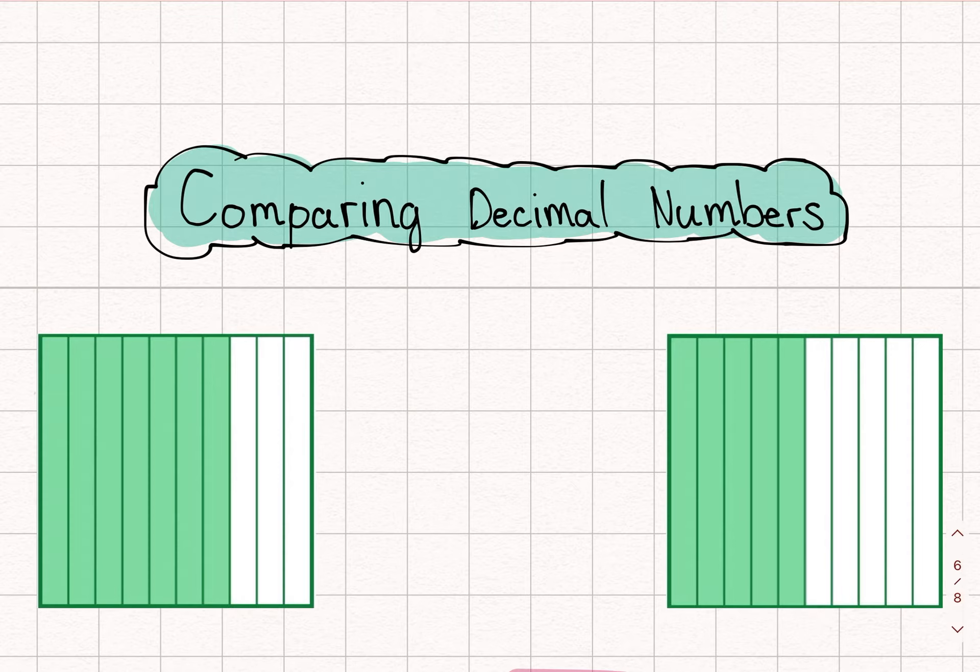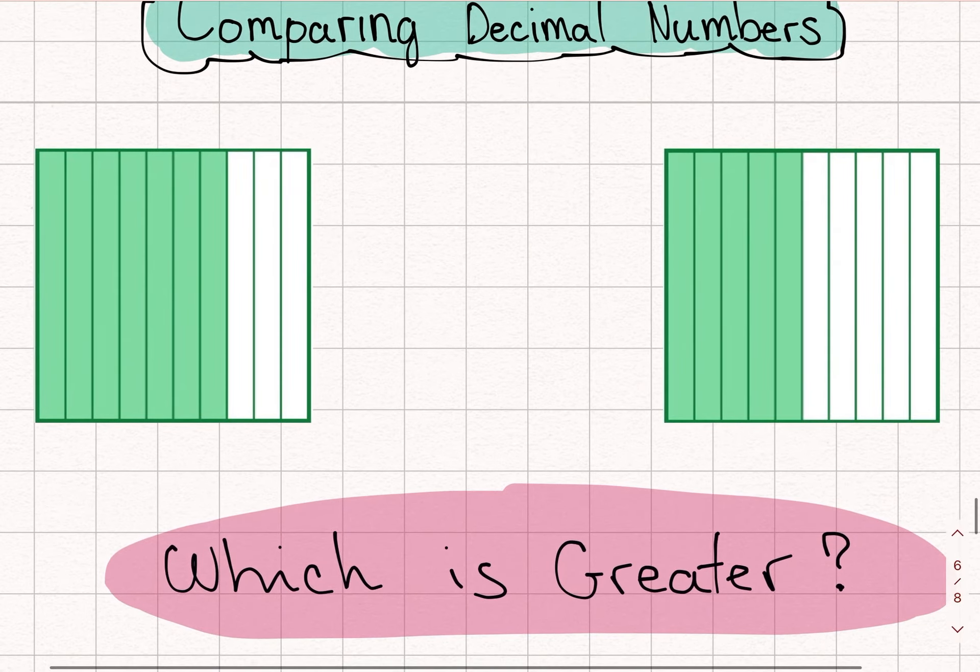So to do so, the first thing we need to do is identify how big one decimal number or another is. Let's take a look at these two. Which is greater?